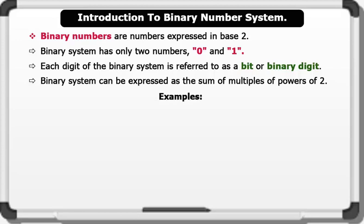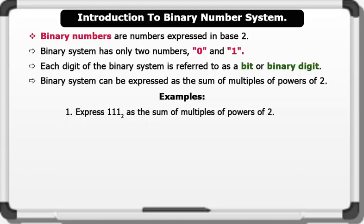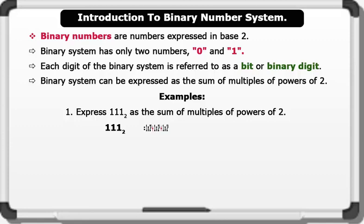Let's see some examples. 1. Express 111 base 2 as the sum of multiples of powers of 2. Solution: 111 base 2. Let's multiply the powers of 2. Equals 1 times 2 raised to the power of 2, plus 1 times 2 raised to the power of 1, plus 1 times 2 raised to the power of 0.